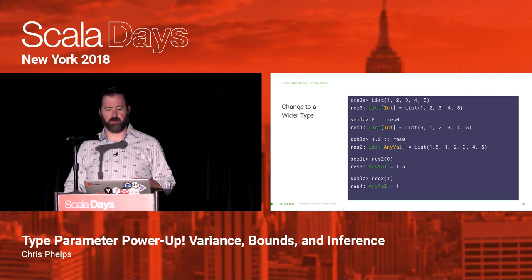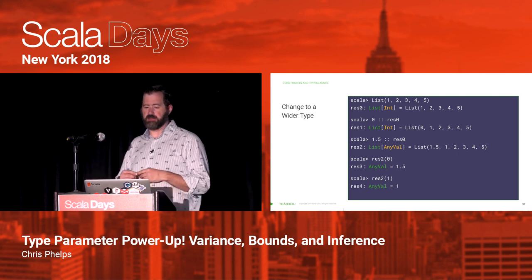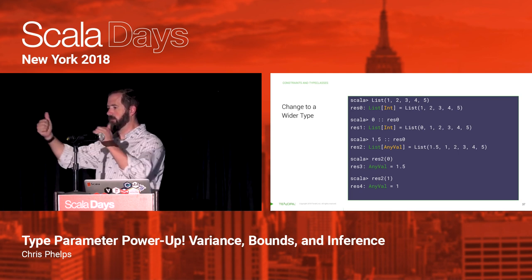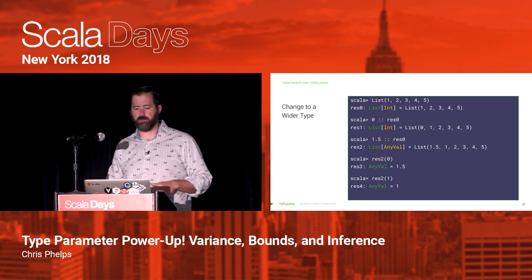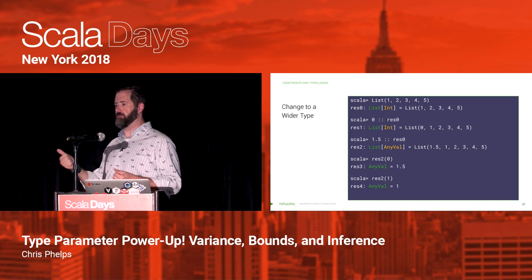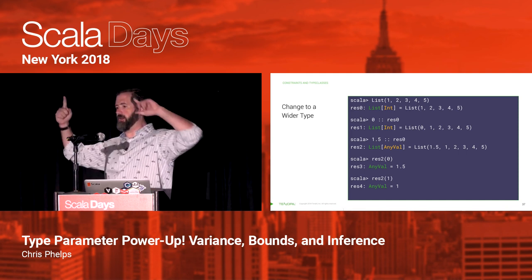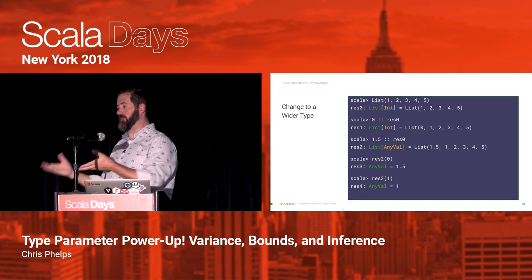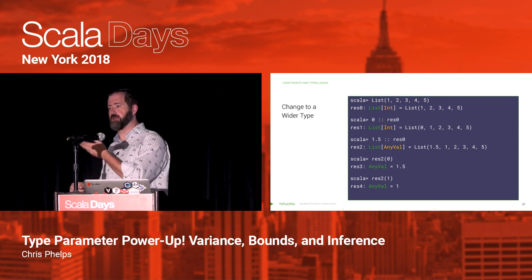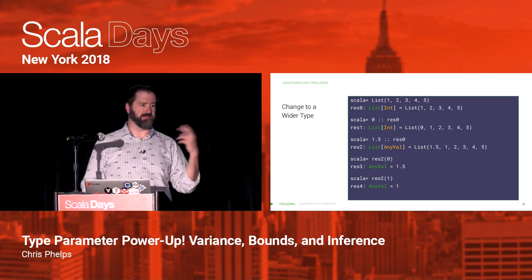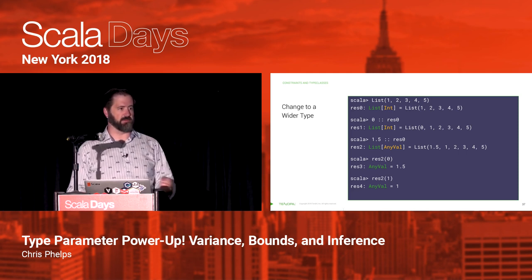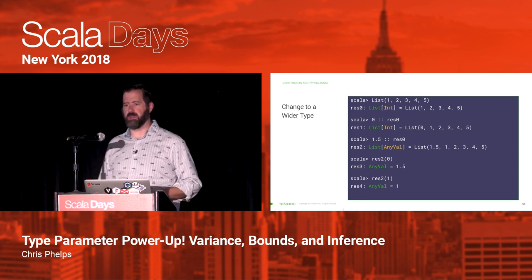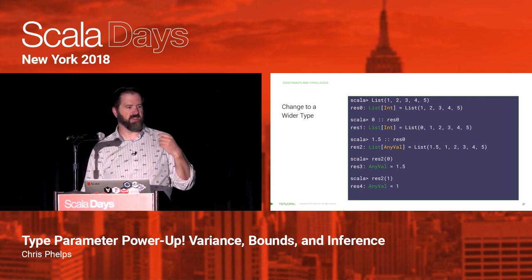So this changes from the same type to potentially a wider type. If I have a List[Int] and try to put a zero on the front, Int is still the same type, so I get a new List[Int]. If I try to put 1.5 in, 1.5 is not an Int, so the compiler finds the lowest upper bound and widens — it becomes a List[AnyVal]. All the Ints are still AnyVals, the new thing's still an AnyVal, so we end up with a wider list. The problem is when we try to get things out, we've lost that some were Ints and some were Doubles — everything we take out is an AnyVal.